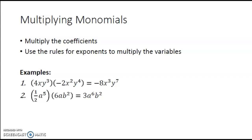In the second example, we have the monomial 1 half a to the fifth times 6ab squared. Notice that the variables in each of these monomials are not exactly the same. The first monomial has an a raised to the fifth power; the second has an a and a b raised to the second power. Even though we don't have the exact same variables, we can still multiply these together. Multiplying the coefficients: 1 half times 6 is 3. Multiplying the a's: a to the fifth times a is a to the sixth. The b squared doesn't have another b to multiply by, so we simply write b to the second power.